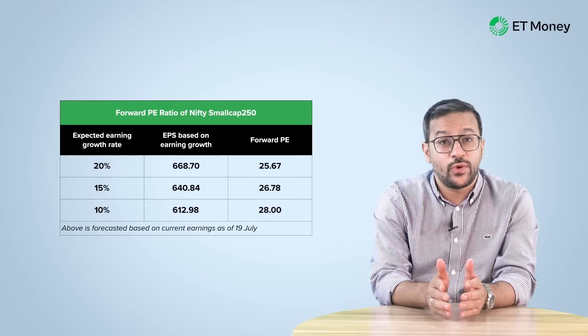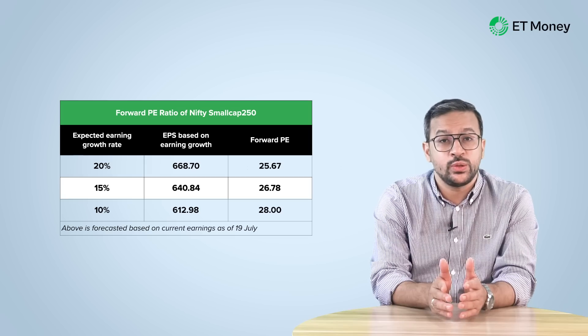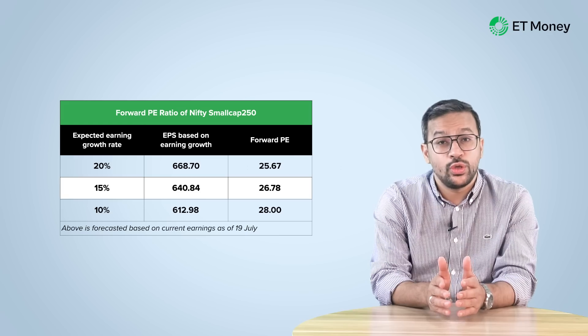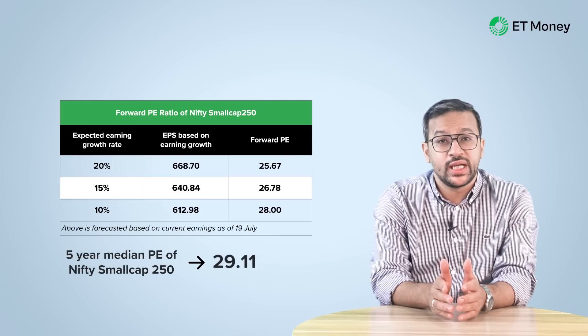If we look at the forward PE of this index and assume the earnings to grow by 15%, the forward PE of the index is 26.78. This is also lower than the 5-year median PE of the index, which is 29.11. The valuation of small caps doesn't appear to be as stretched as the mid cap companies.